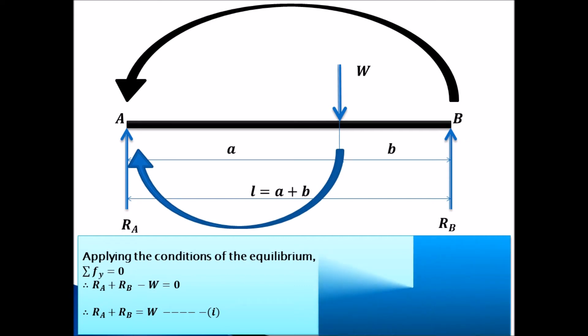Now we'll apply another condition of equilibrium. We'll take the moments about point A. Now if we take moments about point A as shown over here, this RB will have anticlockwise moment about A.